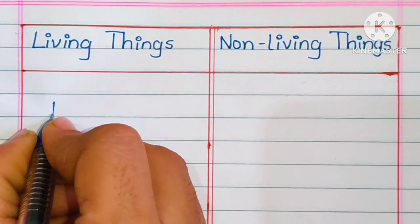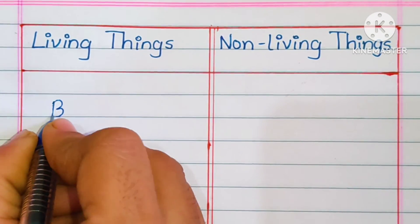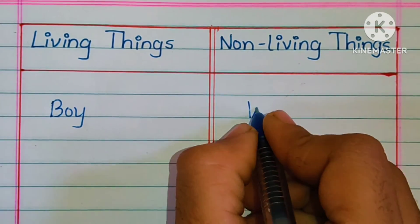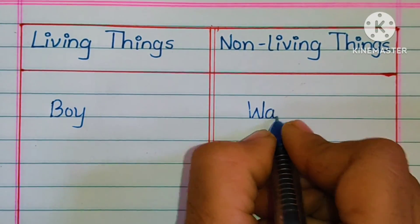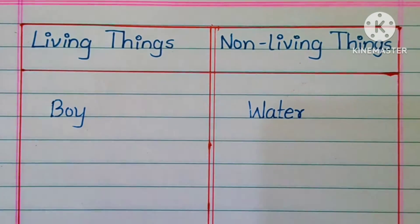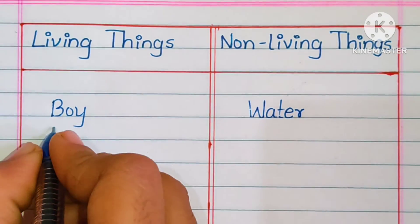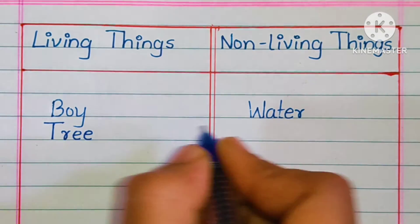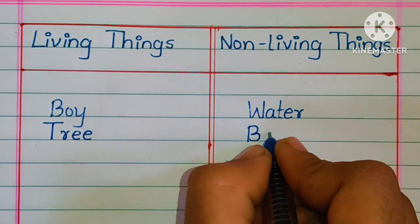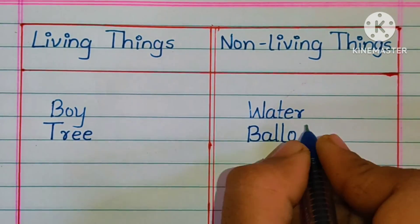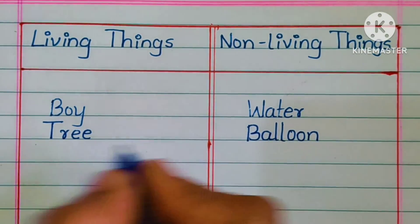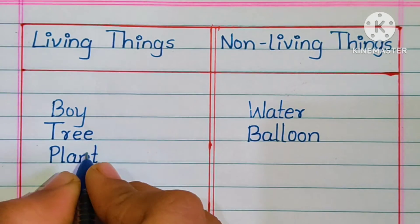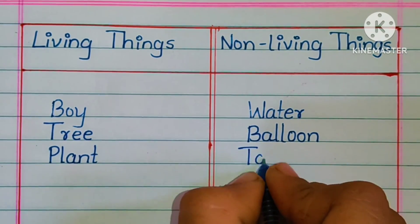Hello everyone, welcome to my channel. Today we are looking at living things and non-living things. In living things will comes boy, and non-living thing is water. Tree — it can be a living thing. Balloon — it is non-living thing. Plant is living thing and toy is non-living thing.